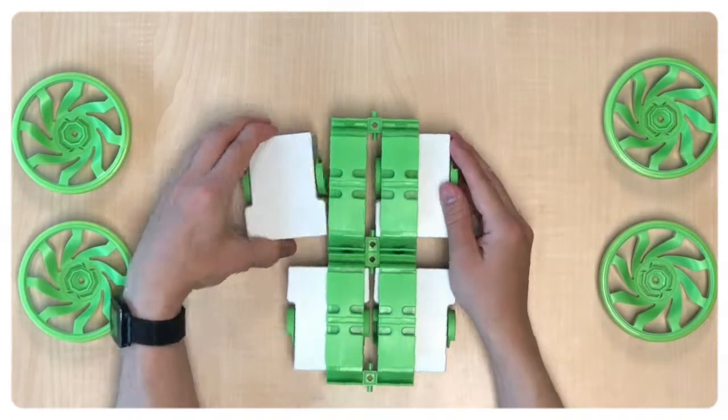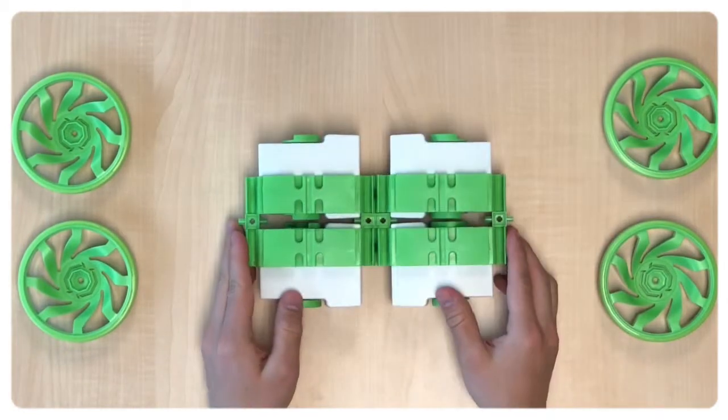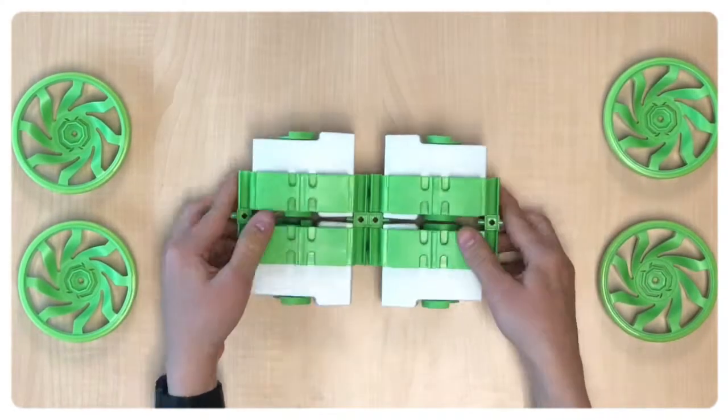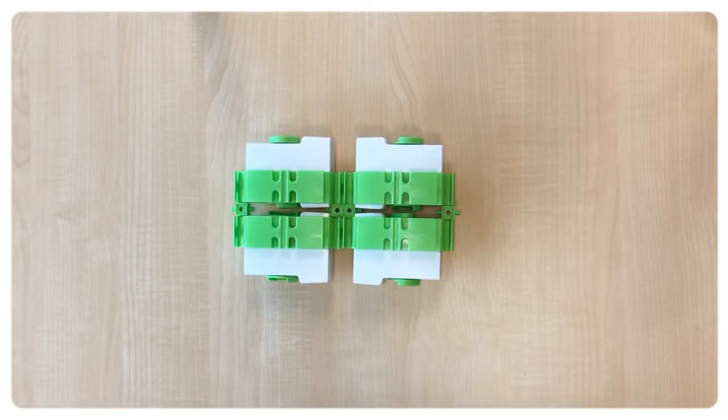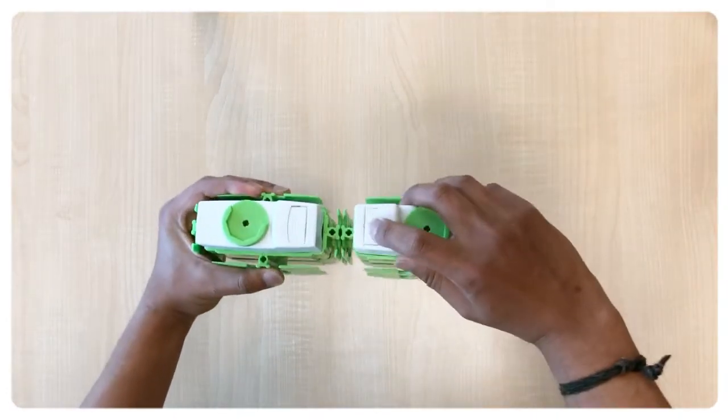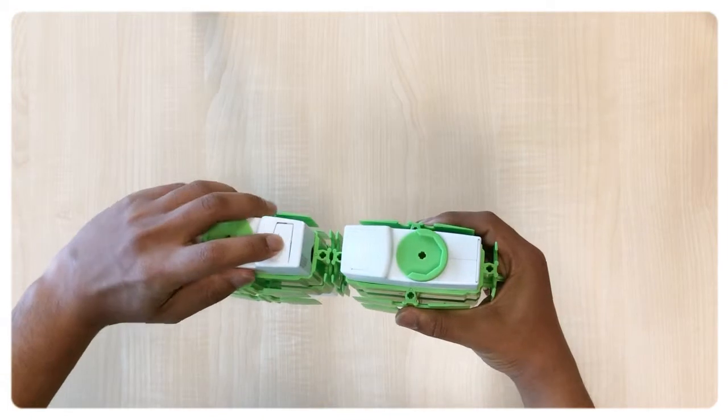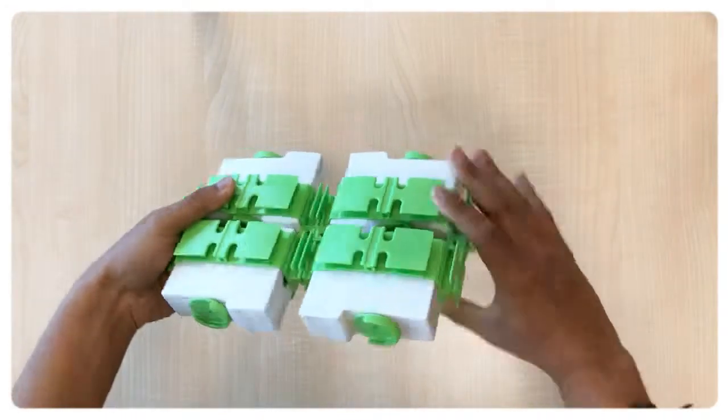Now before we attach the wheels we need to turn on the modules. To do that we press and hold the button on each one of the modules for about one second. You will see a white light and the module will turn on within 25 seconds.